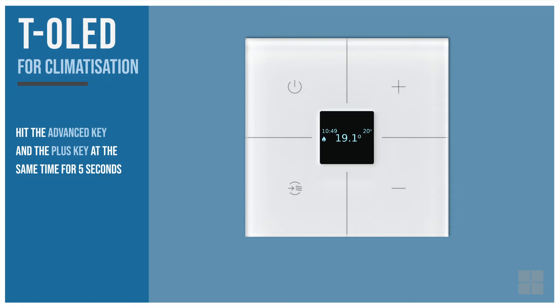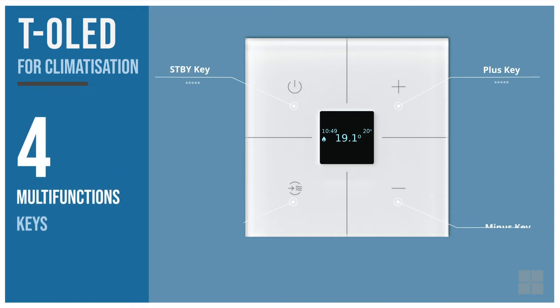After 5 seconds, notice that the automation mode icon disappears. In this mode, we can set and operate the thermostat using the 4 multifunction keys.